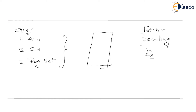After decoding the instruction, finally the execution — that is, the ALU operation — is going to be performed. Now, let us understand what is the business of the control unit here.